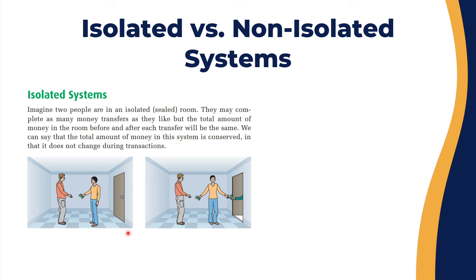To differentiate between isolated and non-isolated systems, imagine there are two people in a room and the door is locked — there is no way to escape. One person has $20 and the other has $10. The room is a closed system. The total money in the room is $30. There is no way for that $30 to increase or decrease — nobody can pass money through the door, money cannot be created, and it cannot be lost. If you search the room, you will always find $30.